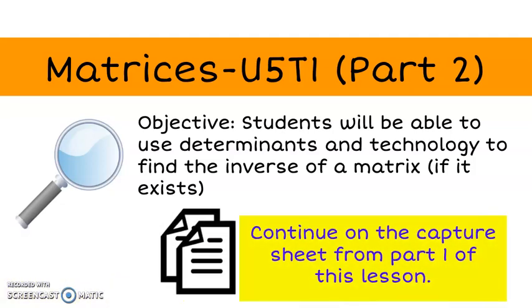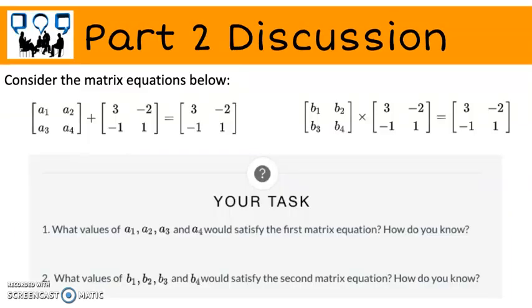Continue to take notes on your capture sheet you used in part 1. Can you find a matrix that could satisfy each statement? A matrix that works in these statements is called an inverse matrix. The first one is the inverse of the given matrix for addition. The second is the inverse of the given matrix for multiplication.